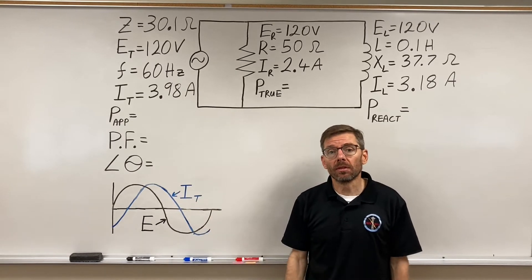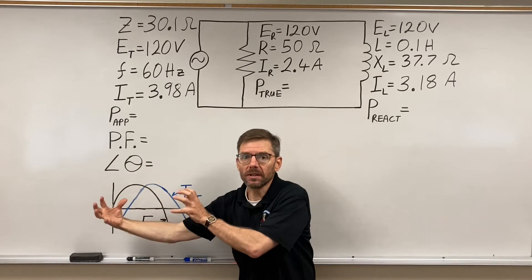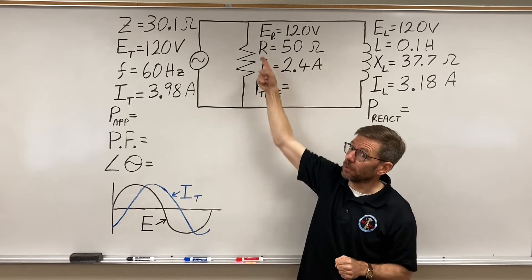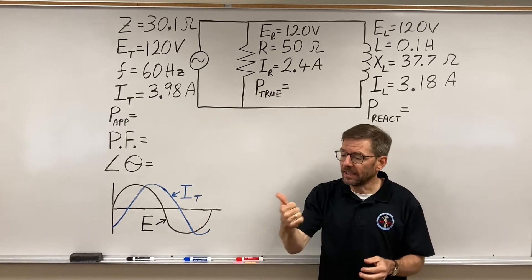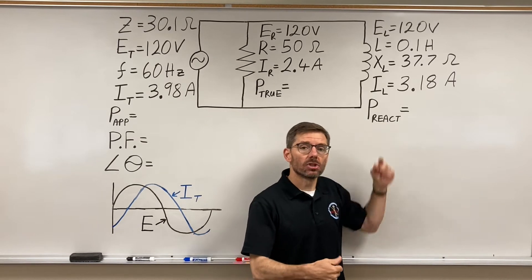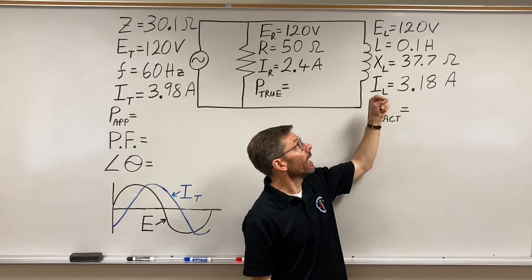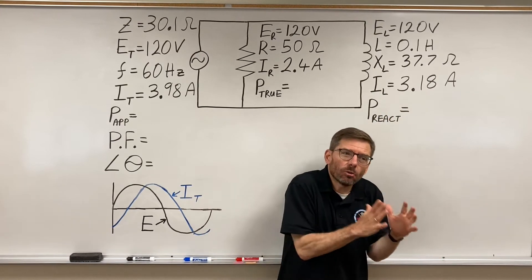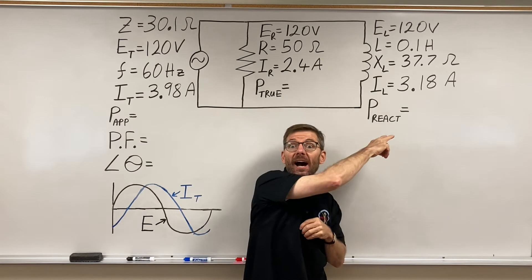Now we're going to deal with power. Apparent power, measured in volt amps, is what the circuit needs to provide. True power, across the resistive component, is the working power — the real power doing real work: the heat, the light, the motion. Then we have reactive power, volt amps reactive, from an inductor. That power is stored in the inductor and then released, stored and released. It's not doing any actual work, but the circuit still needs to provide it.